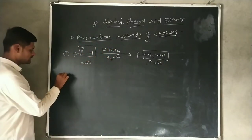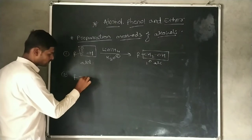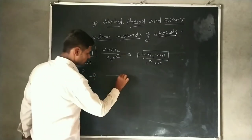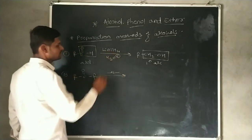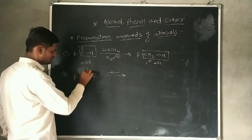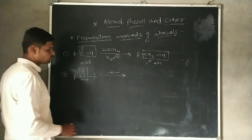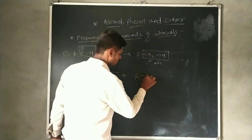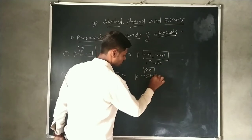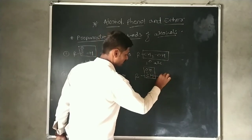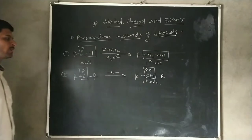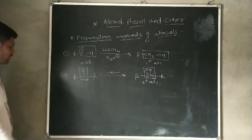Another example: when ketone undergoes the reduction reaction by using lithium aluminium hydride and it undergoes acid hydrolysis, then this carbonyl group gets converted into a CHOH group. There is a formation of secondary alcohol.